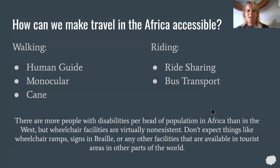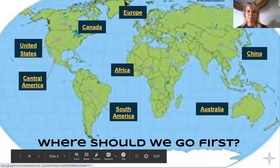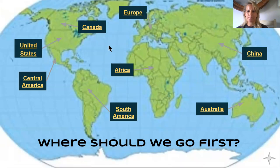For getting around Africa with a visual impairment: a human guide, a monocular, a cane for walking, ride sharing, getting on a bus — the same kinds of tools. Unfortunately in Africa, they don't have a lot of wheelchair accessibility, so if you're in a wheelchair it would be harder to get around. There aren't things like ramps, braille signs, and other features available in more developed parts of the world like the U.S., Europe, and Australia. Always want to have somebody you trust with you if going to another country.